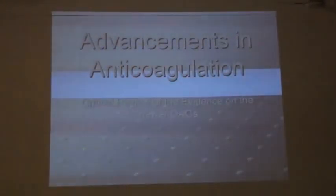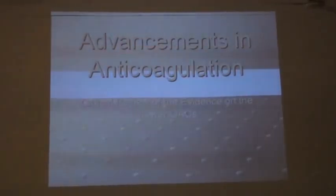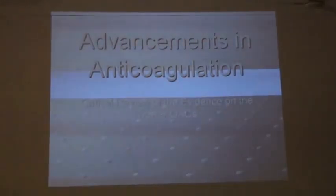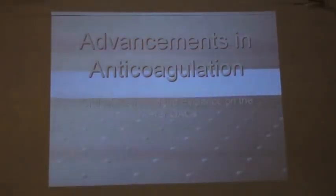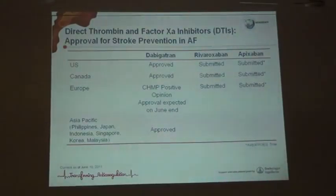Until recently, the only anticoagulants available were vitamin K antagonists such as acenocoumarol or warfarin. They prevent strokes but have major disadvantages: unpredictable dosing requiring INR monitoring, significant drug interactions, and inconsistent lab results across different laboratories. We were always looking for newer oral anticoagulants that would be as effective at preventing stroke but without these disadvantages — predictable dosing, minimal drug interaction, and no need for routine INR monitoring.